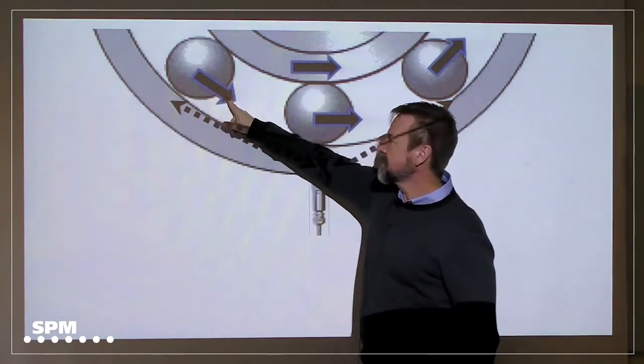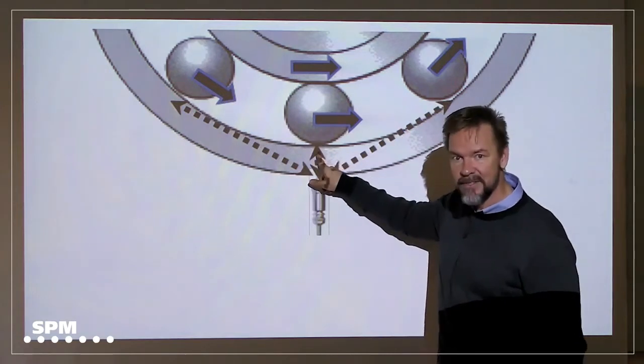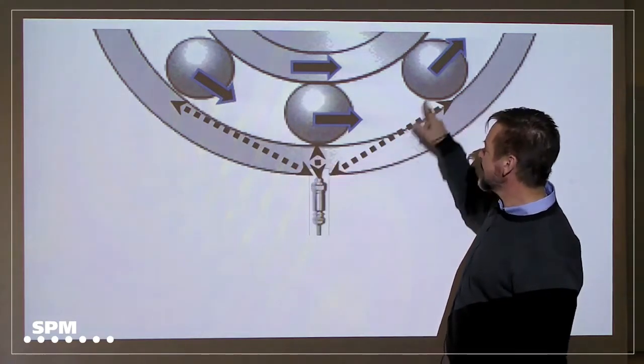The rollers are coming here, passing by the transducer, it's very close to the transducer here, leaving the transducer.